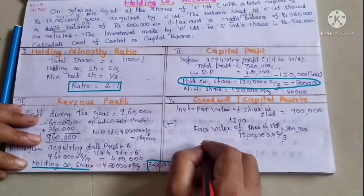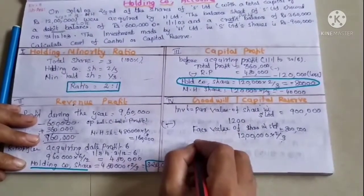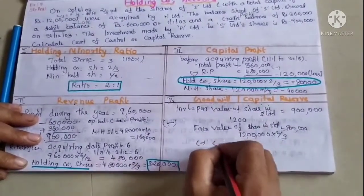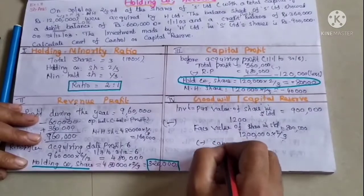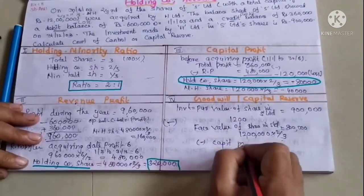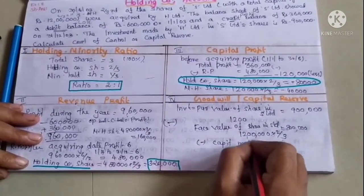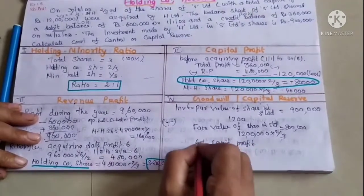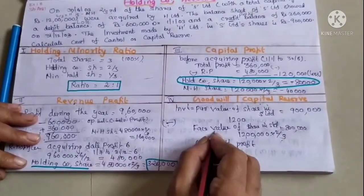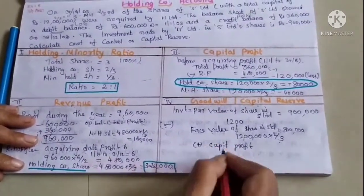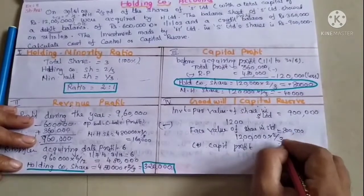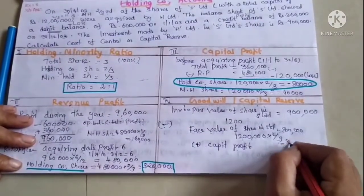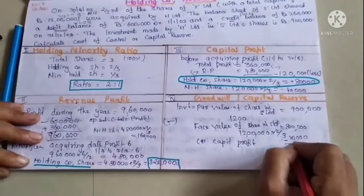The face value of shares is 8,00,000. We then deduct the capital profit share. The capital profit holding company share was minus 80,000, so this is subtracted in the goodwill calculation.